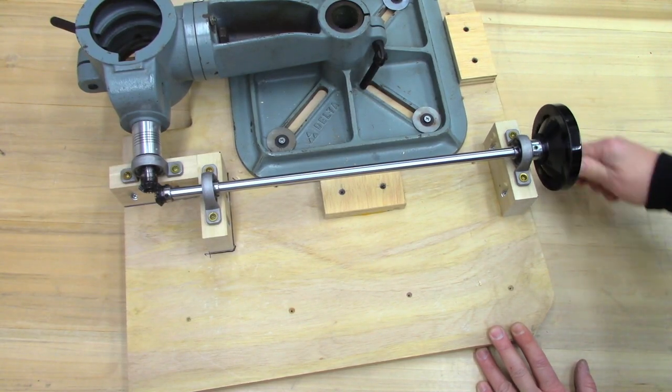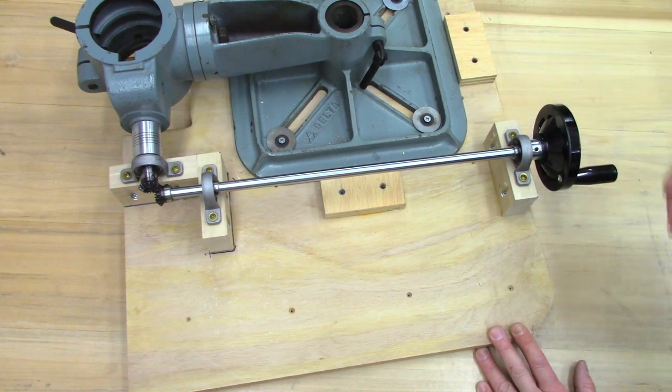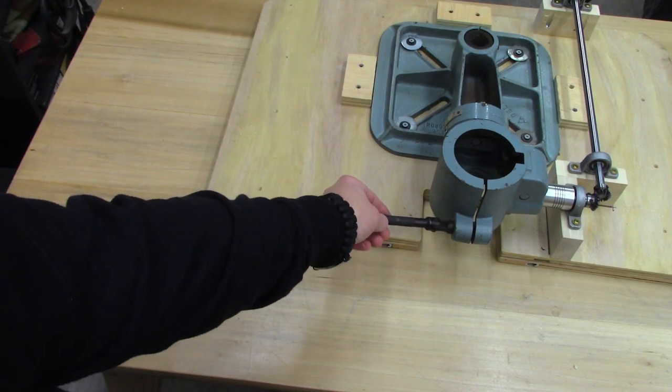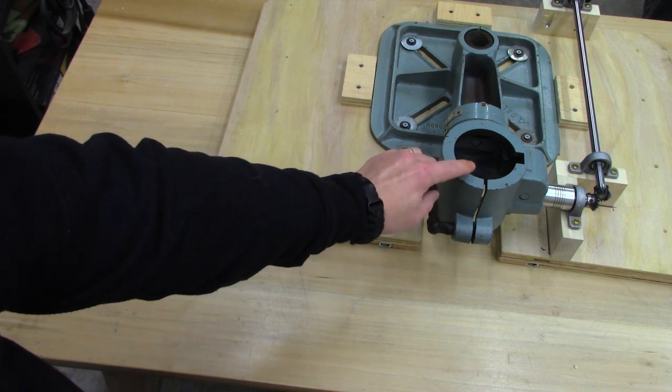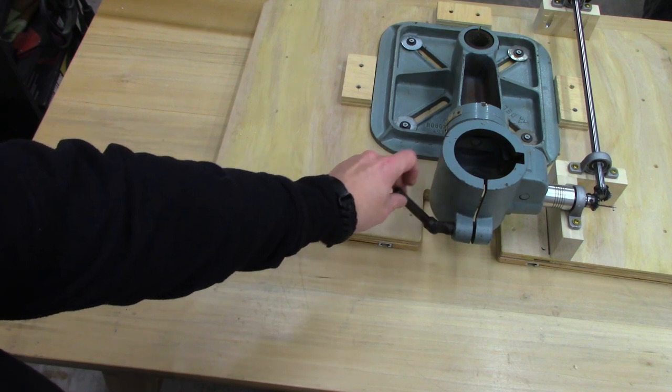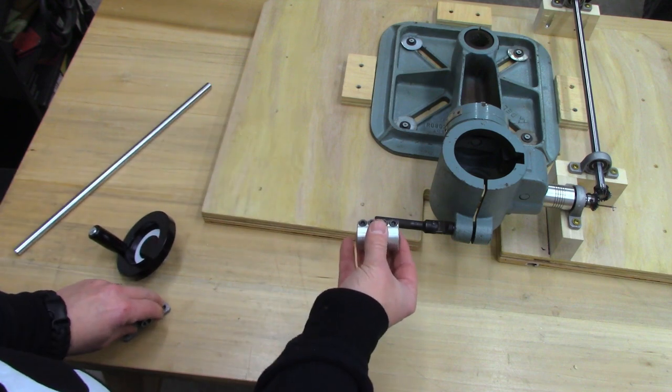So now I'll be able to raise and lower the table from the front. So now I need to do something similar with this here. This is the lock to pinch the housing onto the post. I have another shaft and a coupler.